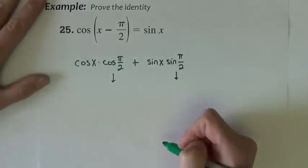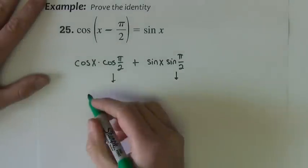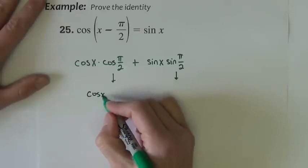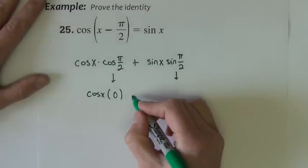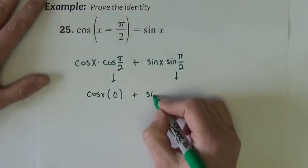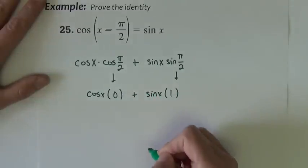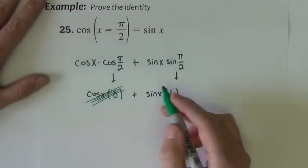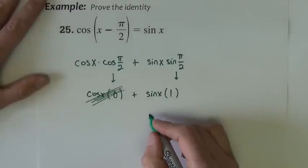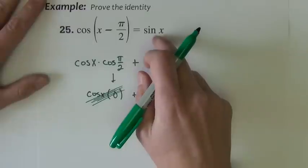These two trig function values have exact values that are known that we're going to pull right off of the unit circle. So we have then cosine x times the cosine of π/2, which is 0, plus sine x times the sine of π/2, which is 1. Of course, cosine x times 0 is 0. Sine x times 1 is just sine x. And that's what we're trying to prove.